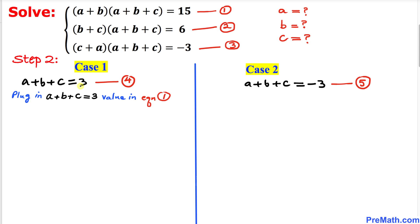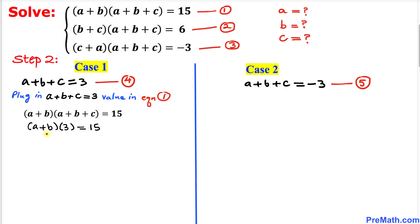For Case 1, we plug a+b+c = 3 into equation 1: (a+b)(3) = 15. Dividing both sides by 3, the 3s cancel, giving us a+b = 5. Let's call this equation 6.